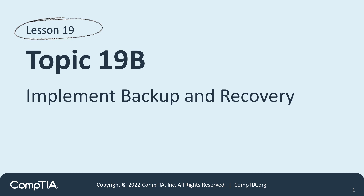Continuing with Lesson 19, in this section we will cover Topic 19b: Implement Backup and Recovery. The process of implementing backup and recovery is a critical component of IT strategy. It involves identifying essential data and scheduling regular, secure backups to protect against data loss. Establishing robust recovery protocols ensures minimal downtime in the event of data corruption or loss, providing peace of mind that business continuity is protected through well-planned, tested, and reliable backup and recovery procedures.